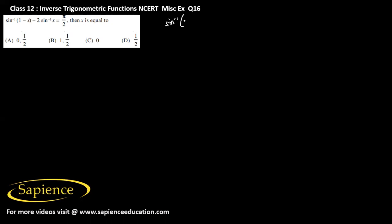We have been told that if sine inverse of (1 minus x) minus 2 sine inverse x is equal to pi by 2, then we have to find the value of x.